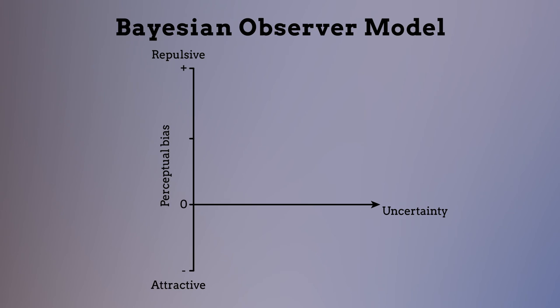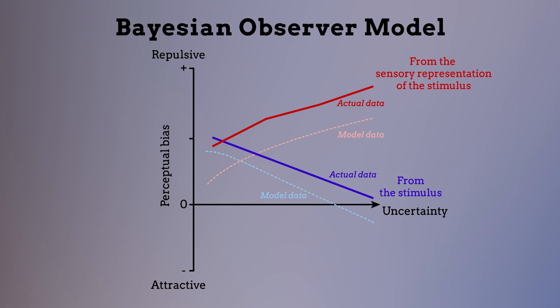The second was that the influence of stimulus uncertainty on perceptual bias depends on whether the uncertainty results from the stimulus itself, or from the sensory representation of the stimulus. Key features of this prediction were also borne out by human perceptual data.